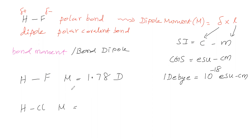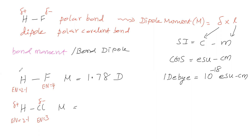Now we will compare the dipole moment of HCl with HF. The electronegativity of hydrogen is 2.1, the electronegativity of Cl is 3, and fluorine is 4. Fluorine has a higher tendency to pull the bonding electron cloud towards itself. So the magnitude of partial negative charge on F is higher, and on Cl it is lower. Therefore, the magnitude of partial charge here for HF is high and for HCl is low.